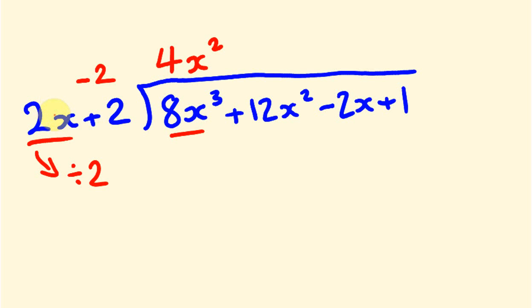So: minus 2 times 4x squared is minus 8x squared. Minus 8x squared plus 12x squared gives us positive 4x squared, but we divide our answer by 2, giving us positive 2x squared. And we go the next power down, so it becomes positive 2x. That makes sense because this term is x squared, so the answer term is x.